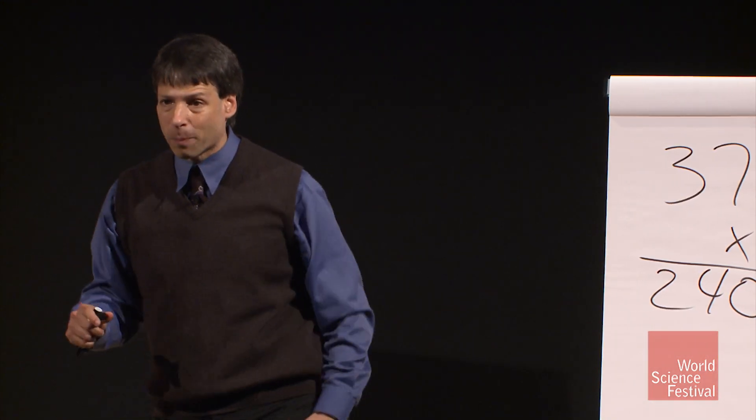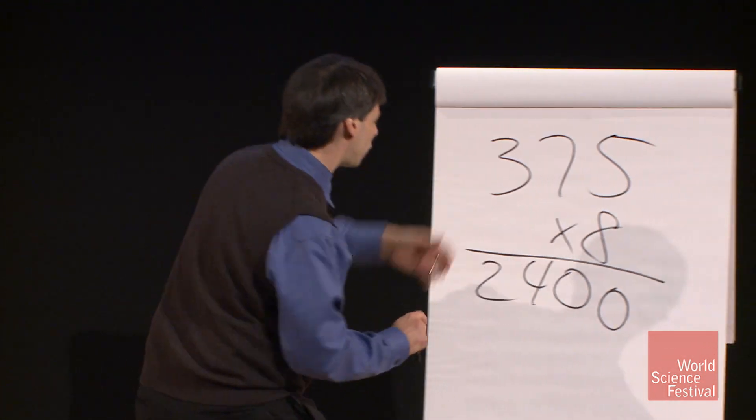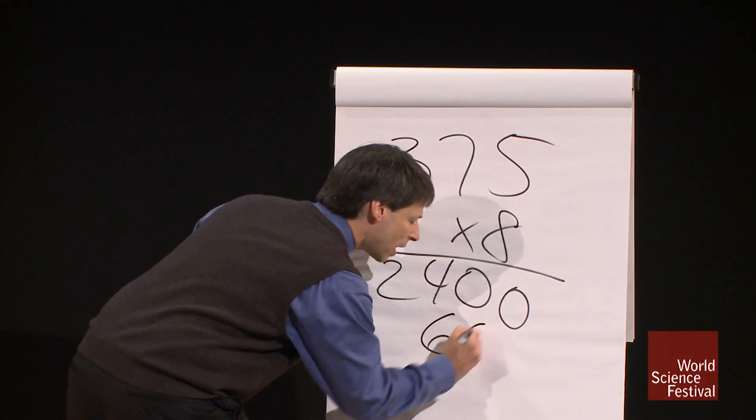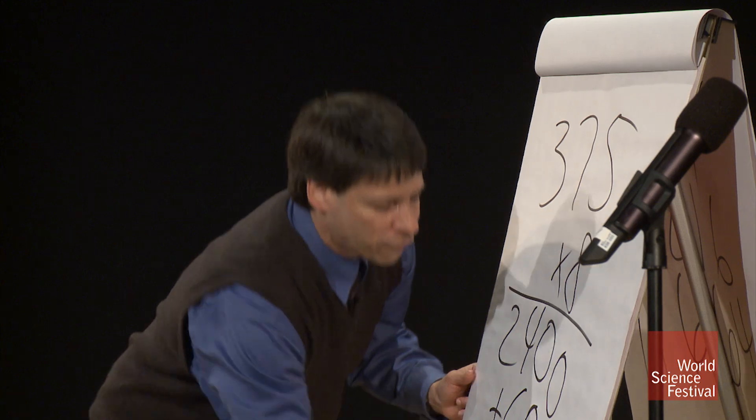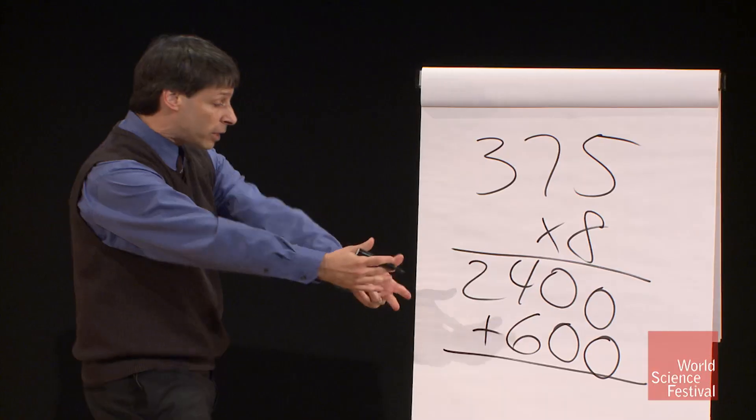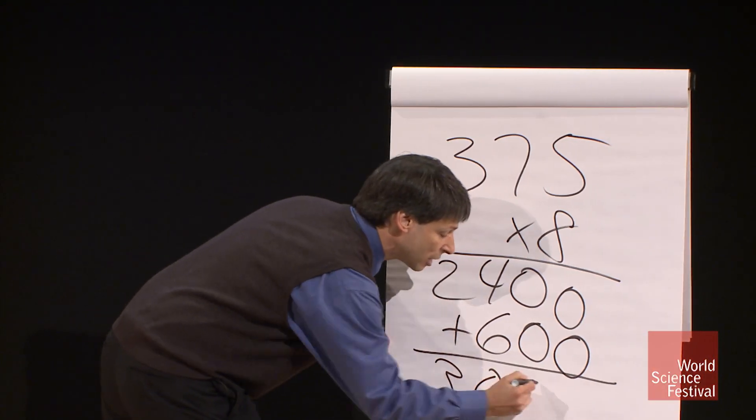If you have eight quarters in your pocket, that's two dollars. So eight times seventy-five is six hundred. I went right to doing that. Twenty-four hundred plus six hundred from left to right is three thousand.